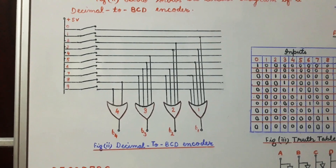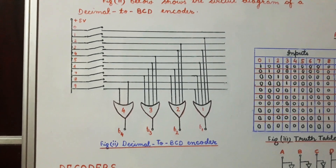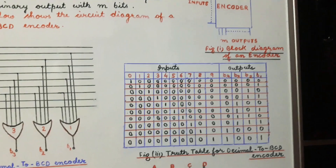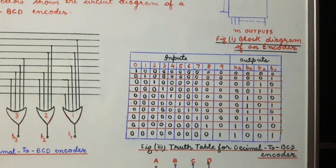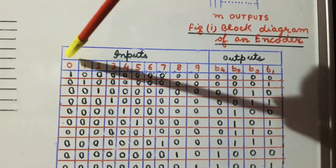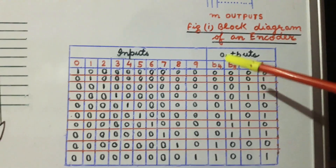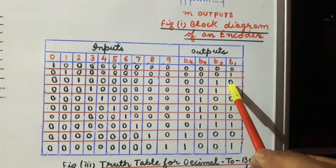In a similar manner, if we press switch 7, then OR gates 3, 2, and 1 are active and so the output B4 B3 B2 B1 is 0111, which is the BCD equivalent of decimal digit 7.